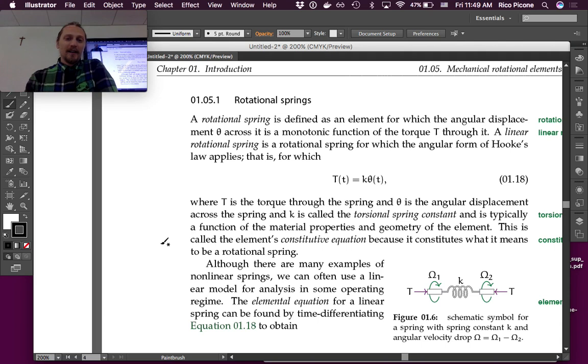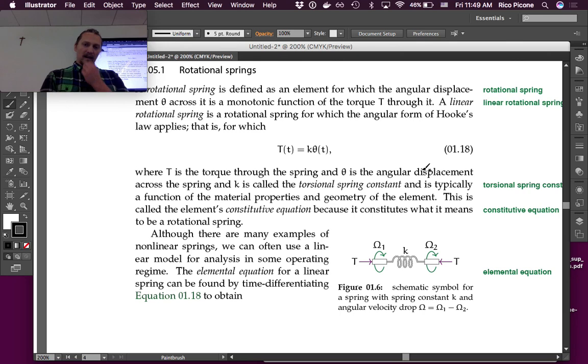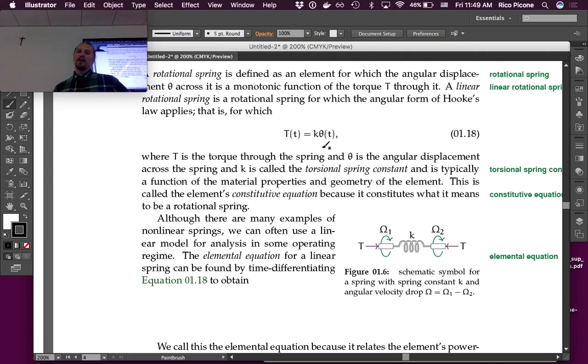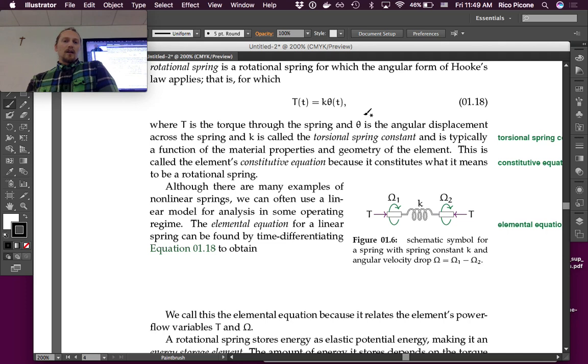In any case, if you have a linear rotational spring, which is a decent approximation of several elements that behave in a spring-like manner, we can use Hooke's law in the angular form and say that the torque is proportional to the twist, to the angular displacement. The spring constant is typically a function of material properties and geometry, just like for a translational spring.